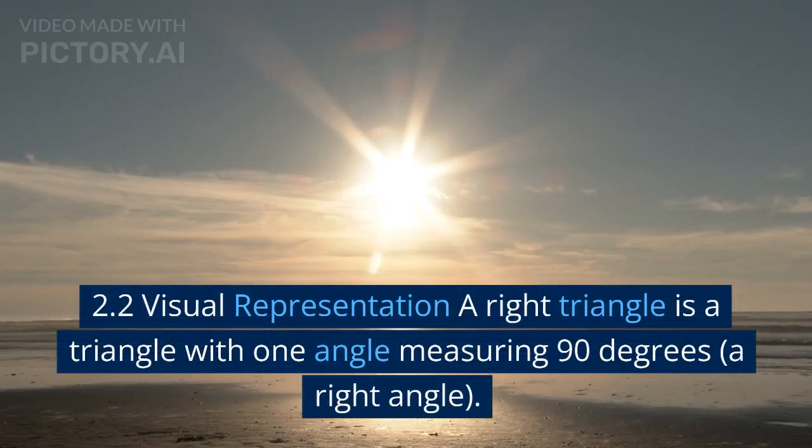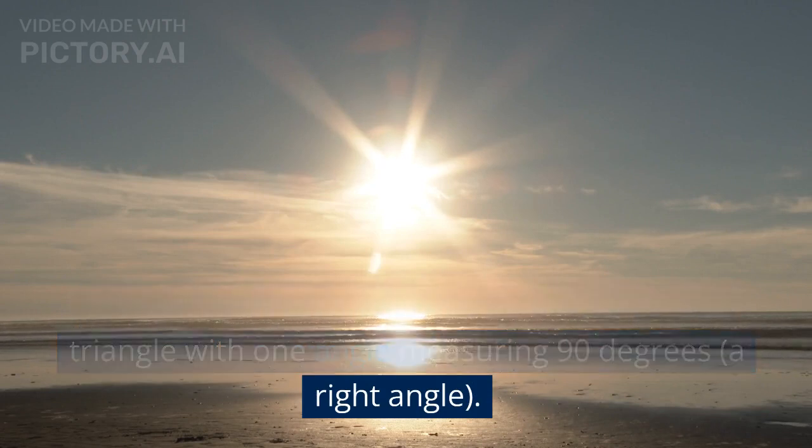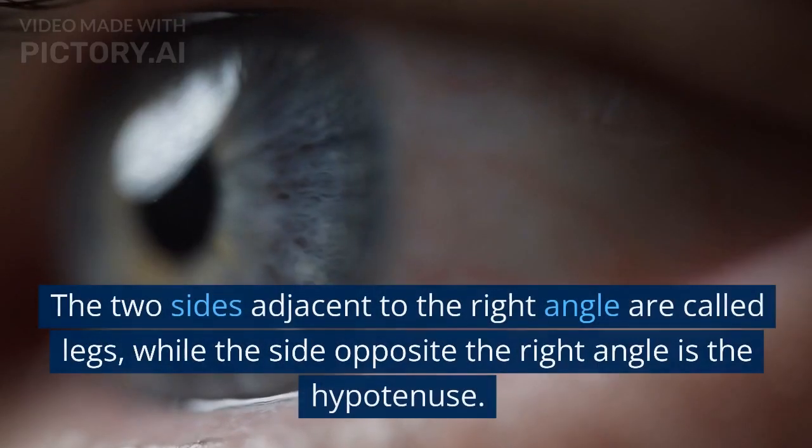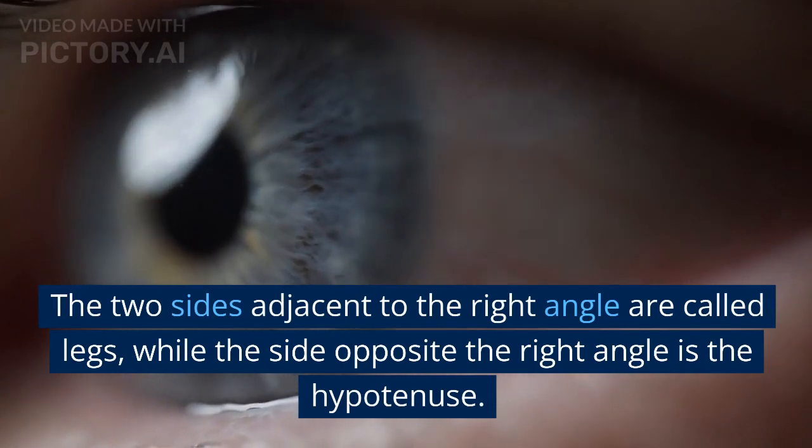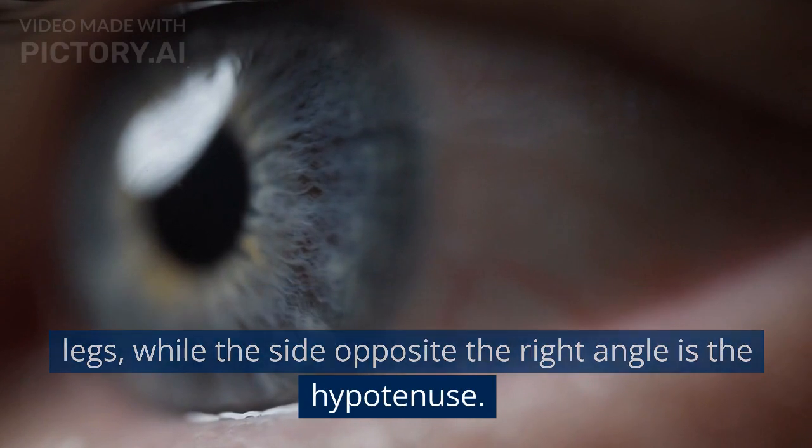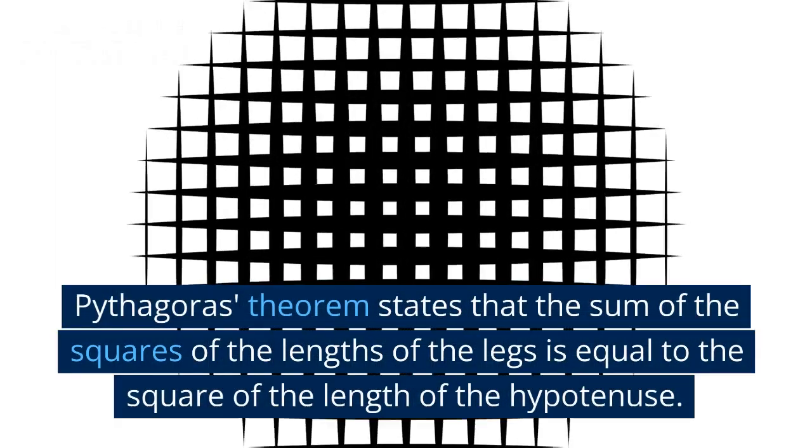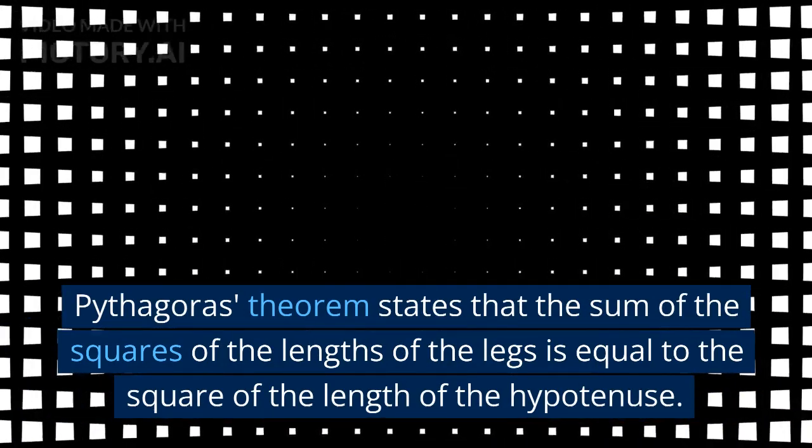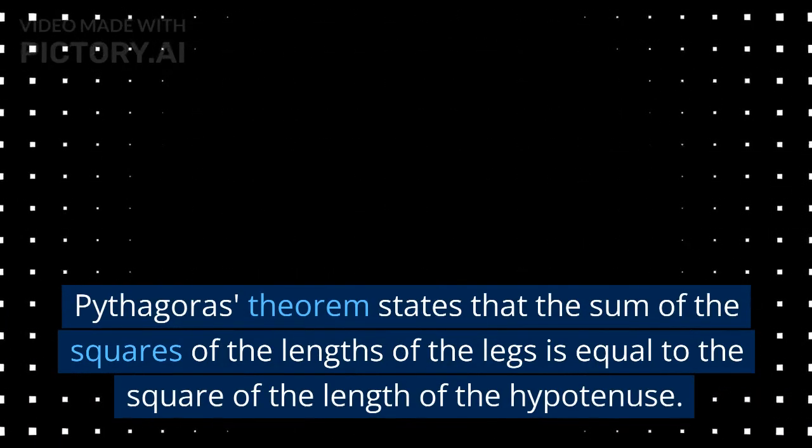Visual Representation: A right triangle is a triangle with one angle measuring 90 degrees (a right angle). The two sides adjacent to the right angle are called legs, while the side opposite the right angle is the hypotenuse. Pythagoras' theorem states that the sum of the squares of the lengths of the legs is equal to the square of the length of the hypotenuse.